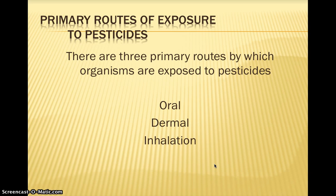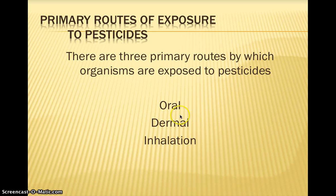One final thought: there are three routes by which you can be exposed to a toxin — oral, dermal, and inhalation. Oral means through your mouth — you're actually consuming it. Dermal refers to skin exposure, like a dermatologist deals with skin — so dermal would be exposure to your skin, where the substance is absorbed into your body. And inhalation would be breathing it in.